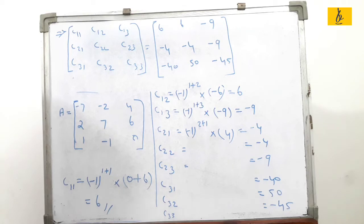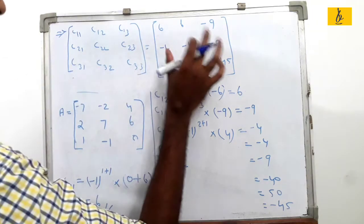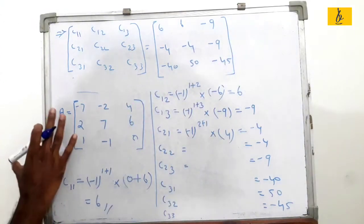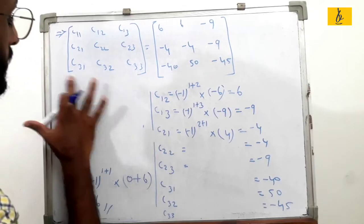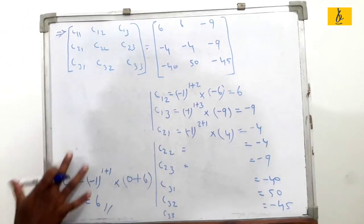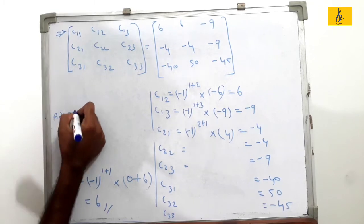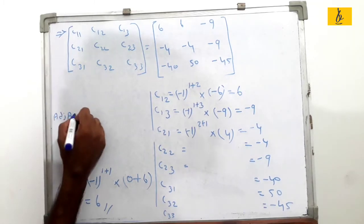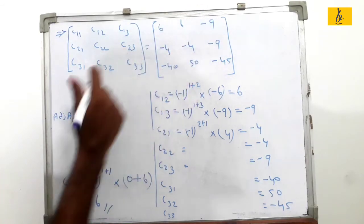The matrix becomes inverse through the adjoint. The cofactor matrix becomes the adjoint when we take its transpose. So if we transpose the cofactor matrix, we call it the adjoint of A. The adjoint is called the adjoint, and with this we can find the inverse.